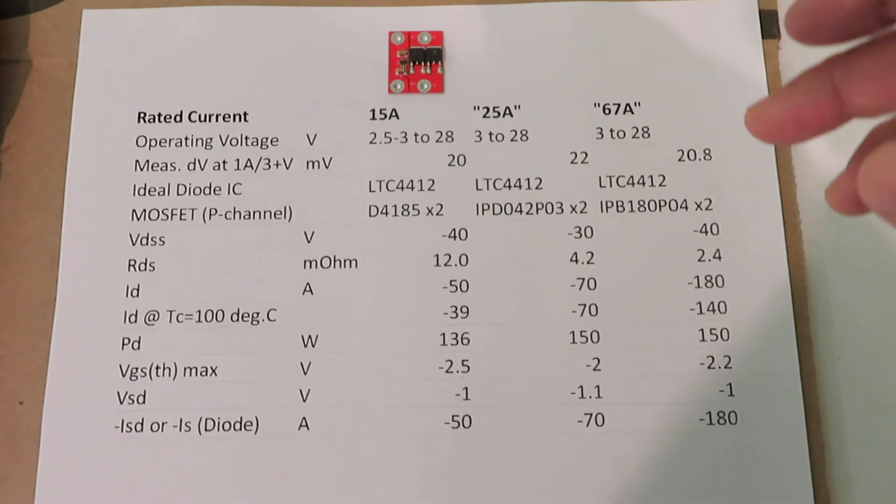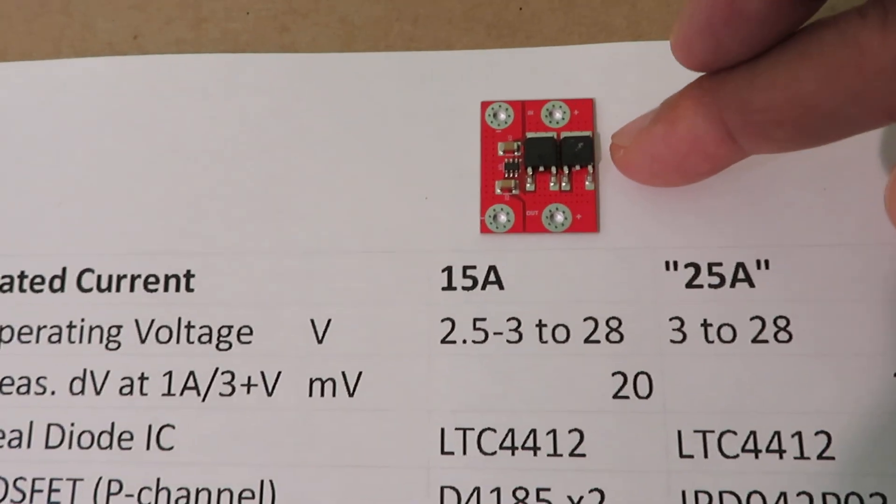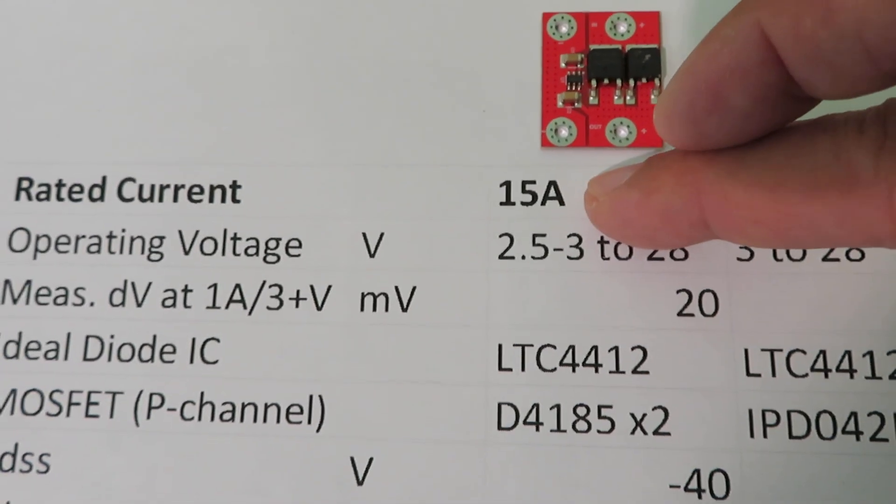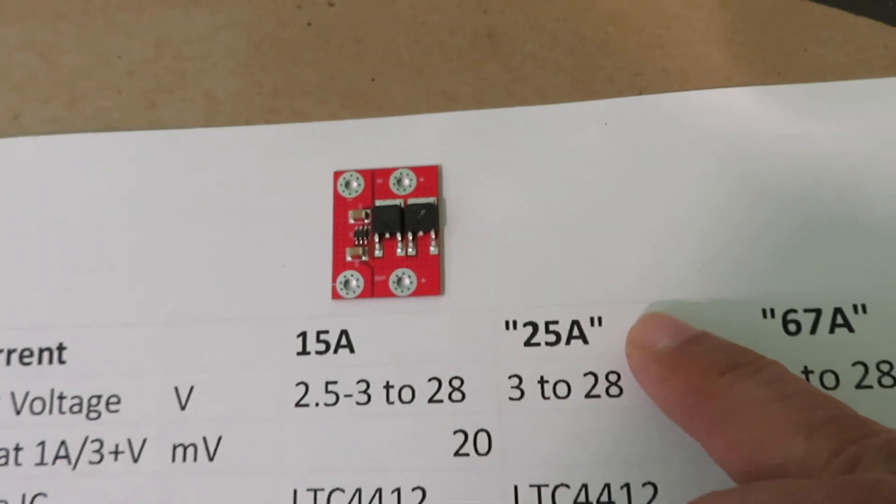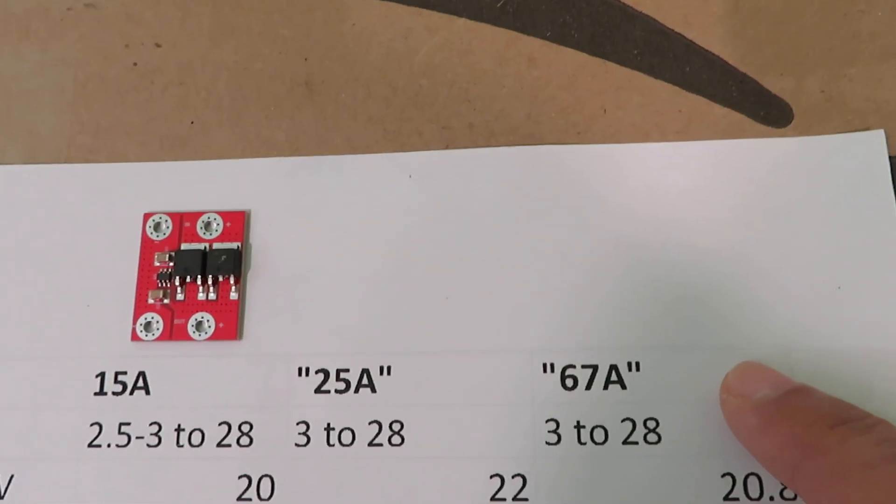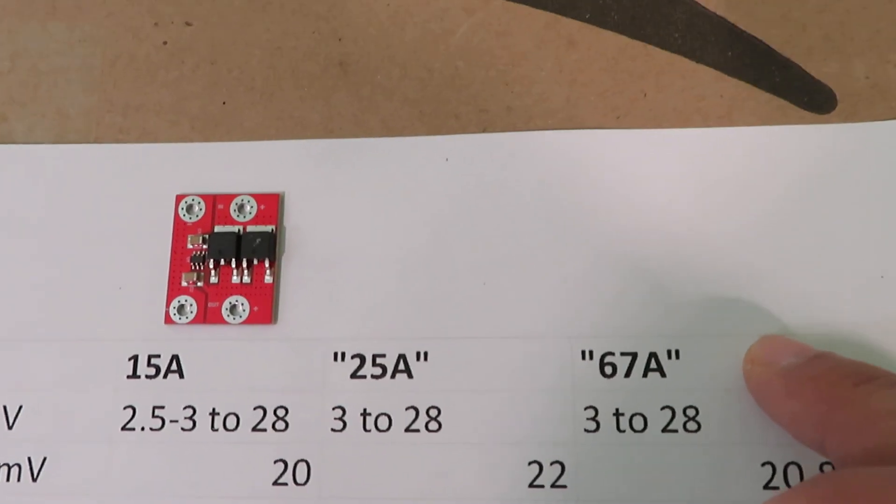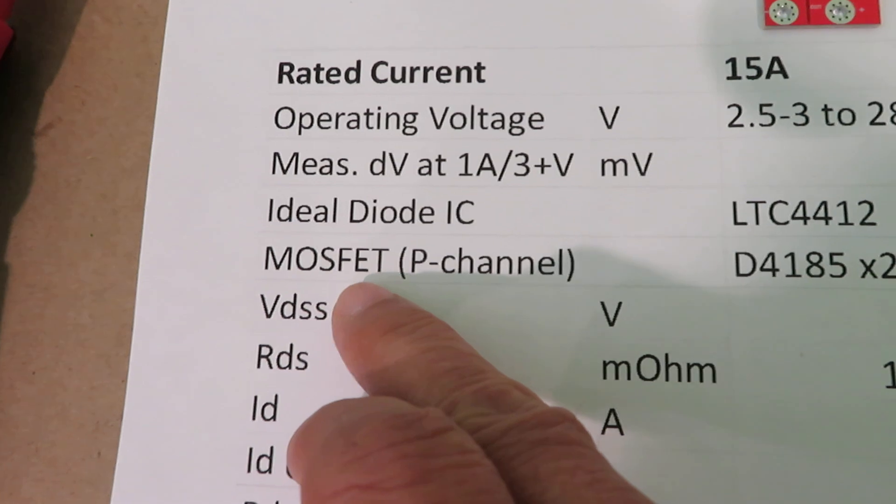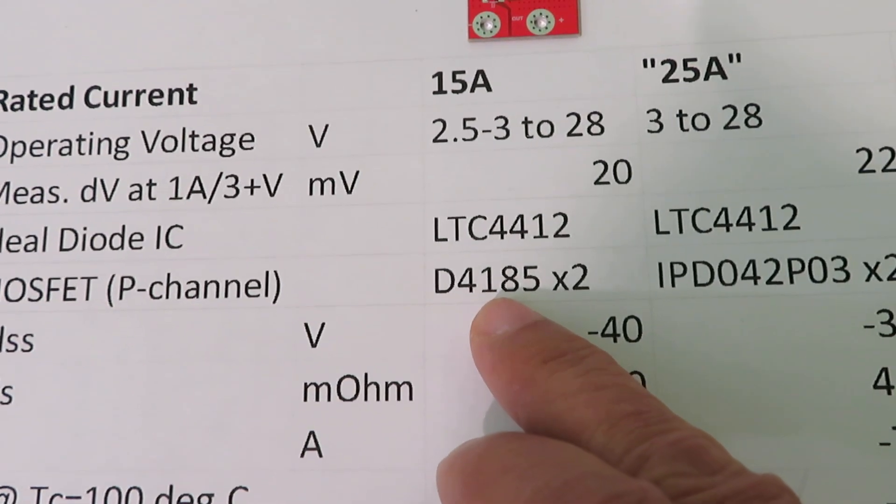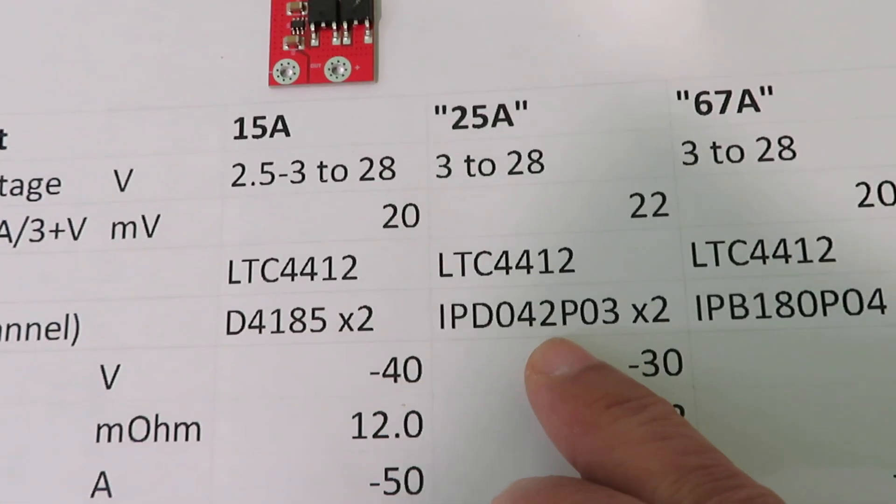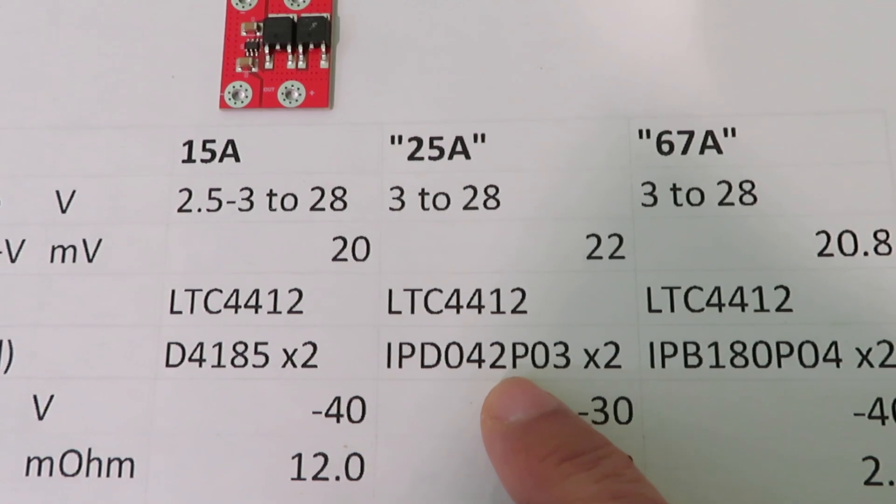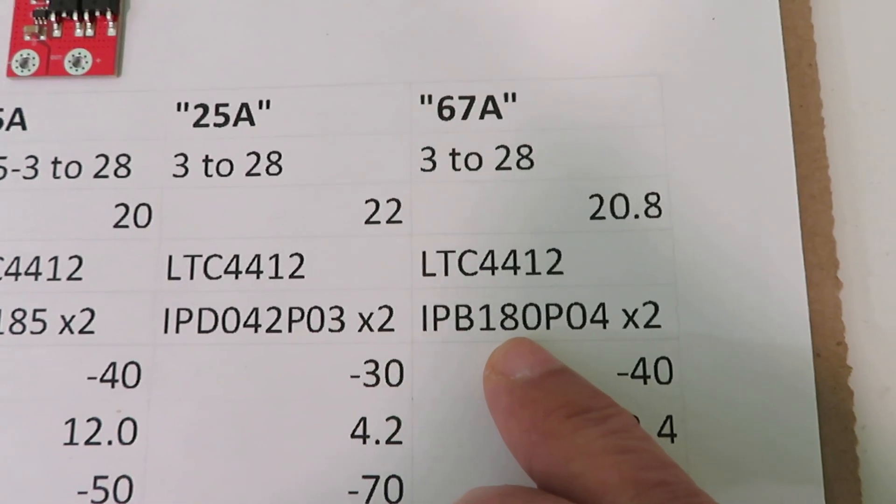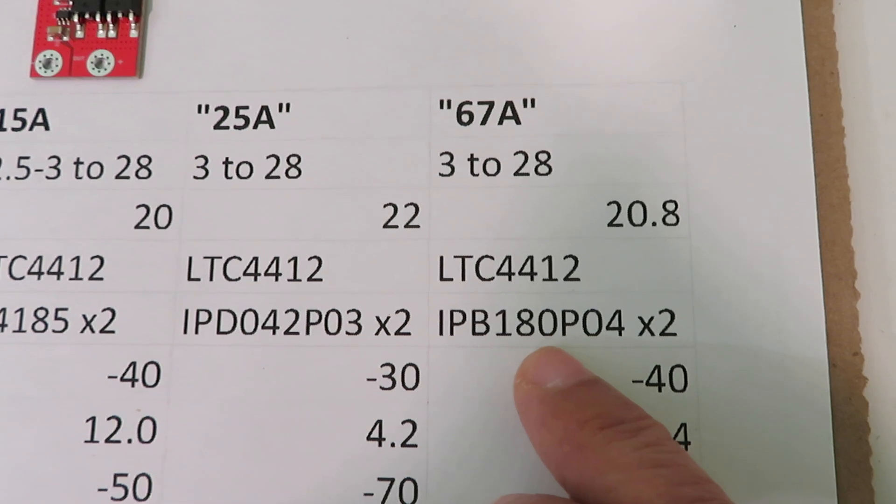Earlier I showed this is the off-the-shelf ideal diode you can buy for a few dollars, it's a 15 amp. I modified a couple of them, one to 25 amp and the latest one is 67 amp. The only modification I did is to change the MOSFET. The original MOSFET is a D4185, then the next version is IPD042P03, and this latest one is IPB180P04.